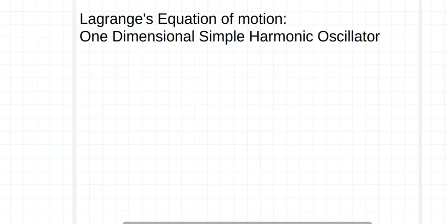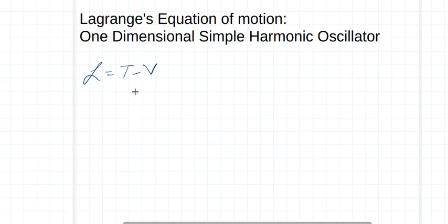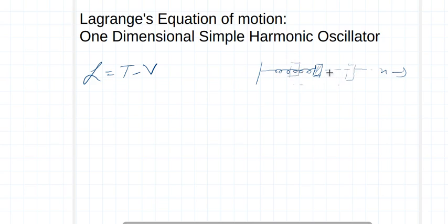In this lecture, I am going to talk about how the Lagrangian equation of motion will help us solve the one-dimensional simple harmonic problem. As discussed in the earlier lecture, the Lagrangian is defined as L = T minus V, where T is the kinetic energy and V is the potential energy. For the harmonic oscillator, we have a mass attached to a spring with spring constant k, and if we give it an extension and release it, it keeps on oscillating.